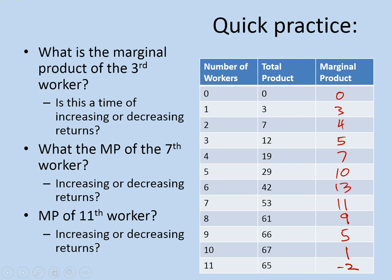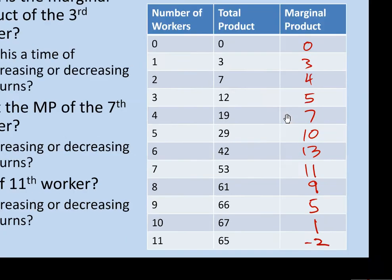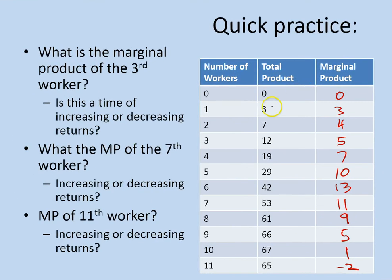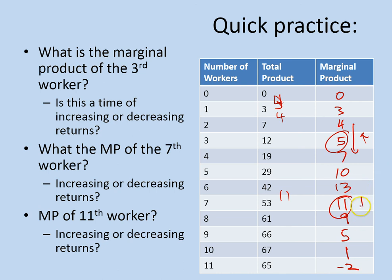So I've worked out all the marginal products — again, it's just the difference between the total products. The marginal product of the third worker is five. Is this a time of increasing or decreasing returns? We can see the numbers are still going up, so this is increasing returns. What's the marginal product of the seventh worker? It's 11. Is this increasing or decreasing returns? It was 13 before, then 11, then 9 — so this is decreasing returns.